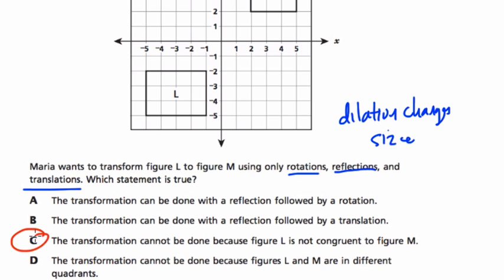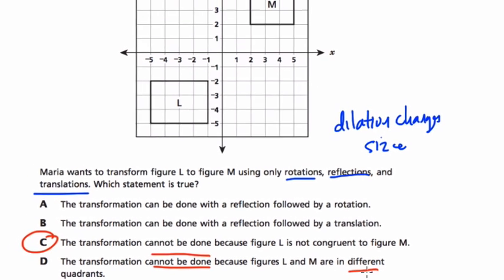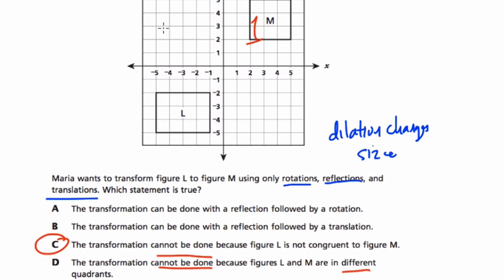C is the answer. Ah, why? Well, they both say it can't be done. But D says it can't be done because they're in different quadrants. Remember the quadrants? 1, 2, 3, and 4. That's nothing to do with it.